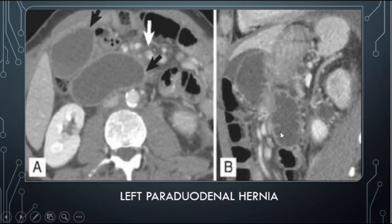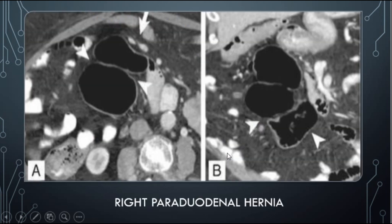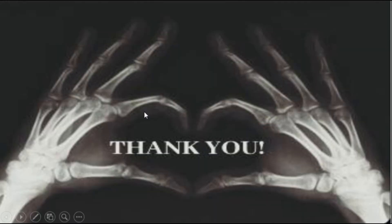The right paraduodenal hernia occurs through a defect called the fossa of Waldeyer in the ascending colon, located in the right lower quadrant, and is usually associated with malrotation. The classic setting is non-rotated small bowel with normally rotated large bowel. The dilated small bowel loops are on the right, below the third part of the duodenum and behind the superior mesenteric artery. On CT, the superior mesenteric artery should normally be posterior to the bowel loops, but here they are herniated into a posterior position.